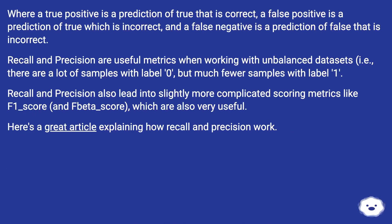Where a true positive is a prediction of true that is correct, a false positive is a prediction of true which is incorrect, and a false negative is a prediction of false that is incorrect.